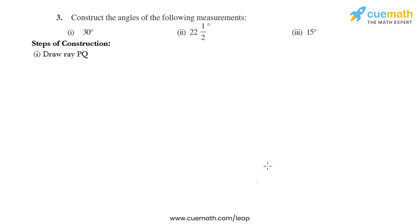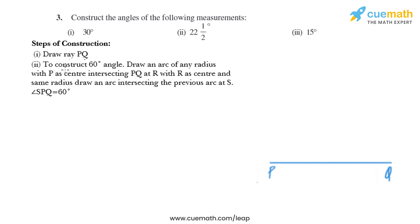Step 1: Draw ray PQ. Now, to construct a 60-degree angle, draw an arc of any radius with P as center, intersecting PQ at R. With R as center and the same radius, draw an arc intersecting the previous arc at S. Angle SPQ equals 60 degrees.